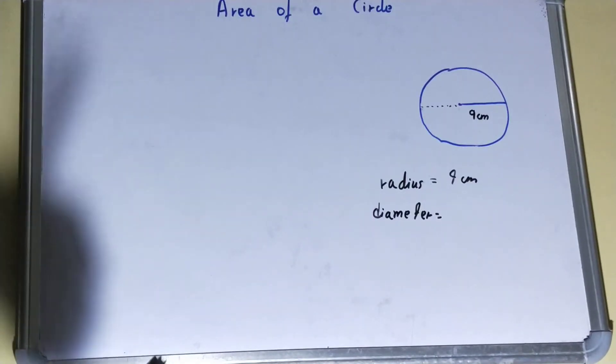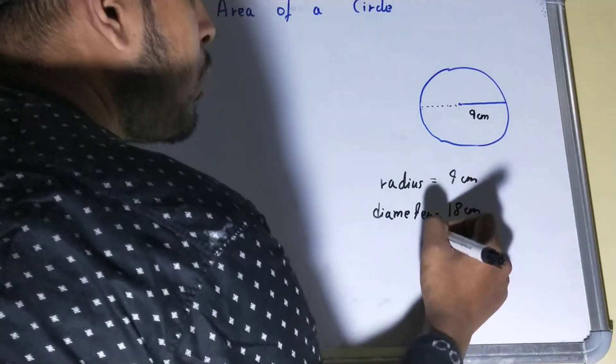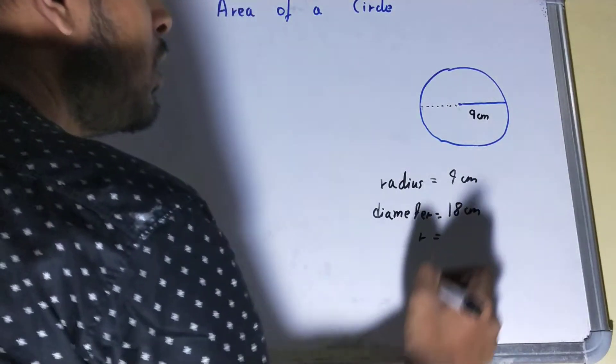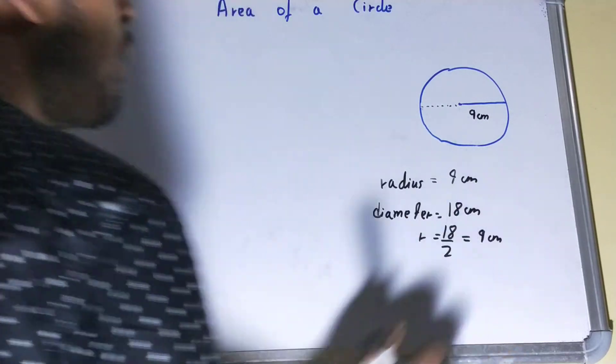If diameter is 18 centimeters, then to find out the radius, what you need to do is divide the diameter by 2 to obtain the radius. For finding the area, you need the radius of the circle.